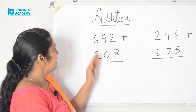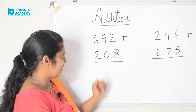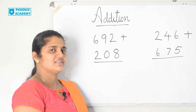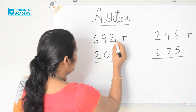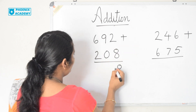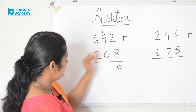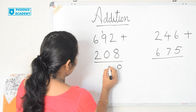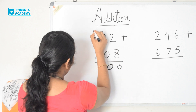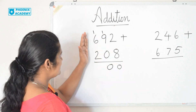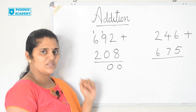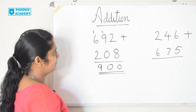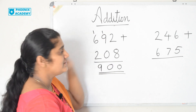Let's solve this example. 692 plus 208. Let's add the 1's. 2 plus 8 is 10. 10 is 0 ones and 1 ten. I write 0 in the 1's place and 1 carry forwarded to the 10's place. Let's add the 10's now. 1 plus 9 is 10. 10 plus 0 is 10. I write 0 here and 1 carry forwarded to the 100's place. Let's add the 100's. 1 plus 6 is 7. 7 plus 2 is 9. So the answer is 900. Here we are regrouping 1's and 10's.